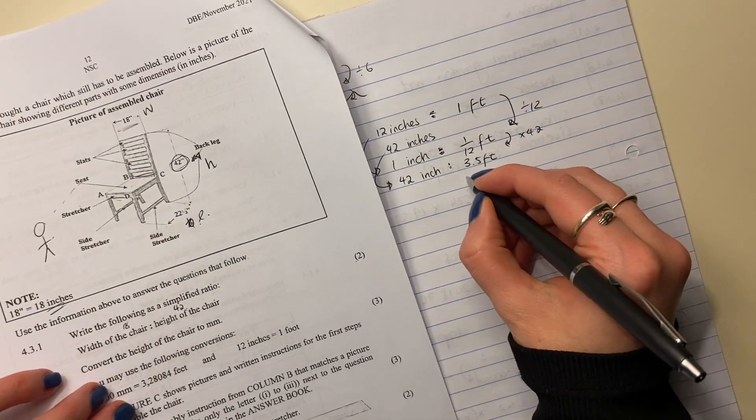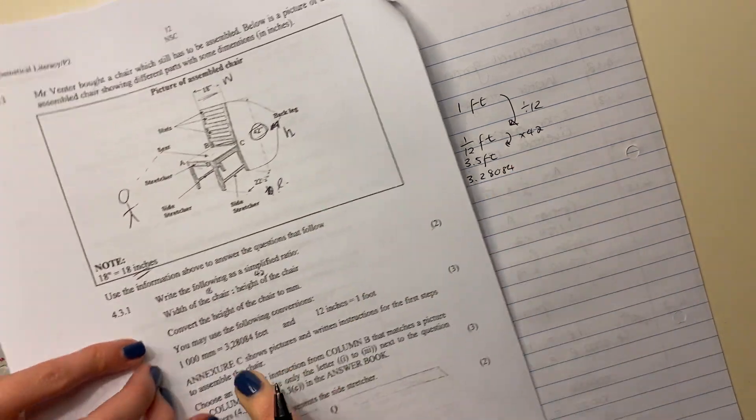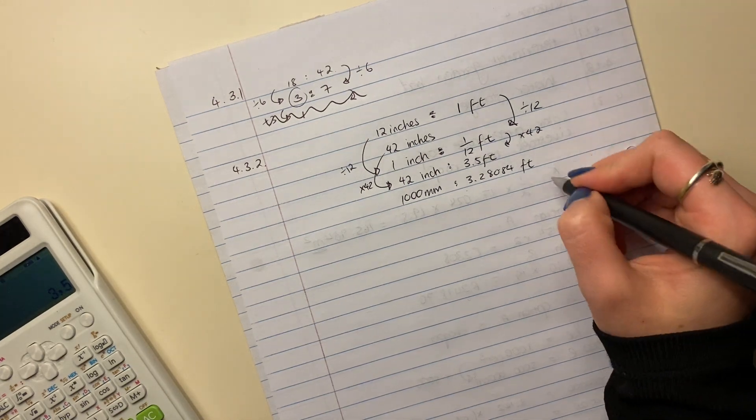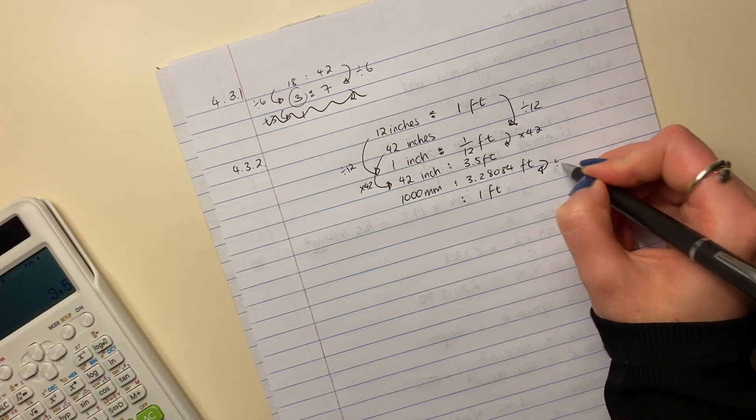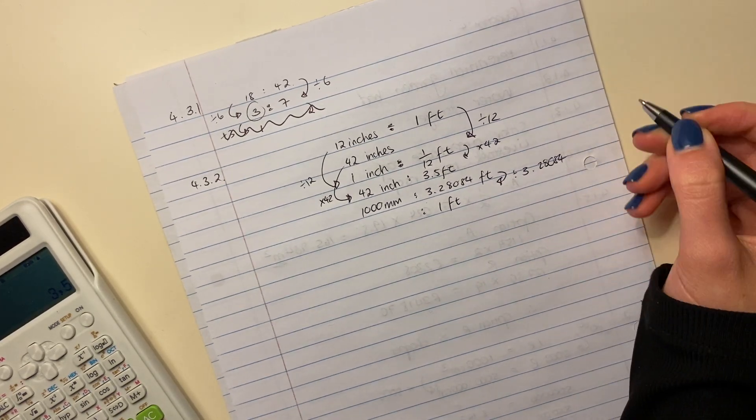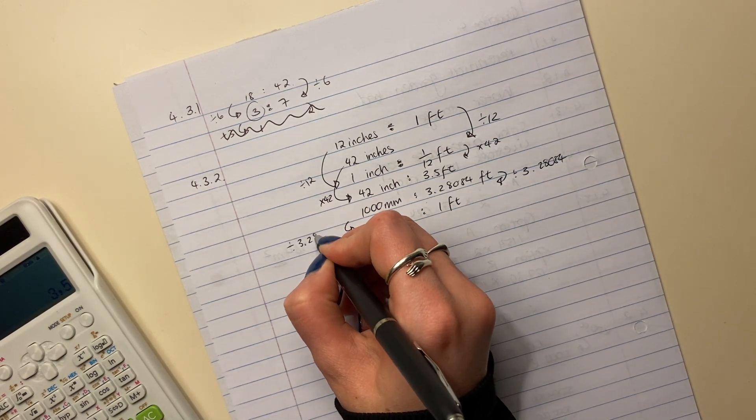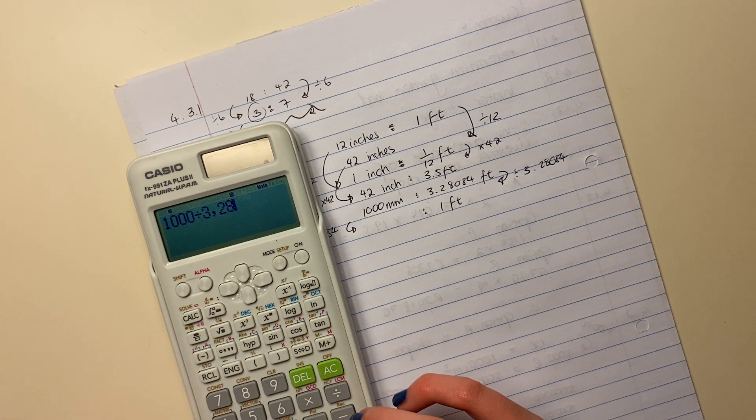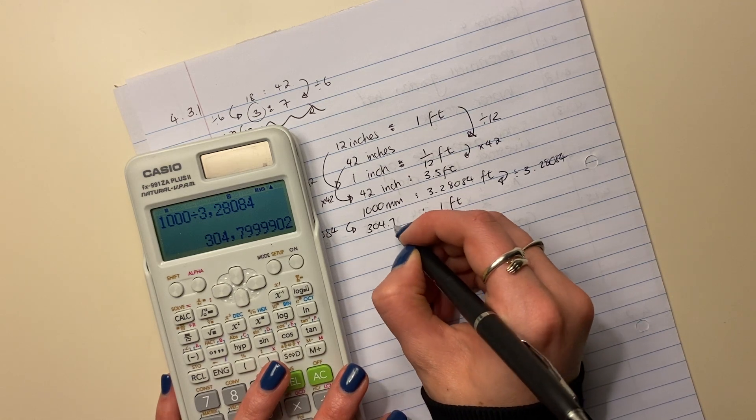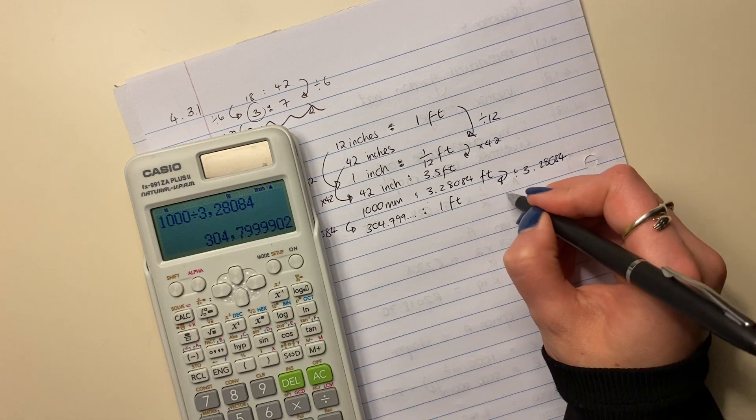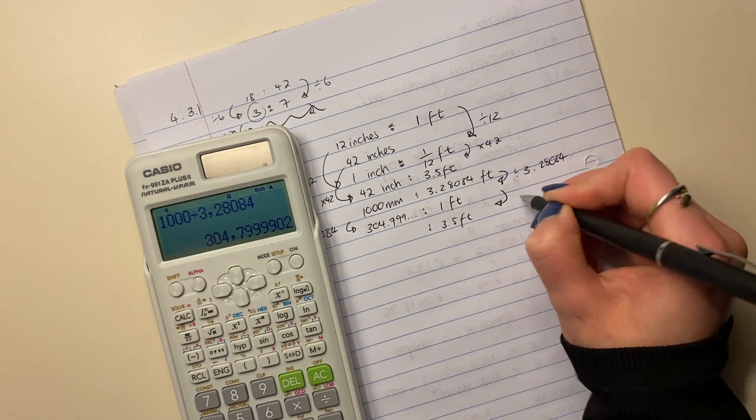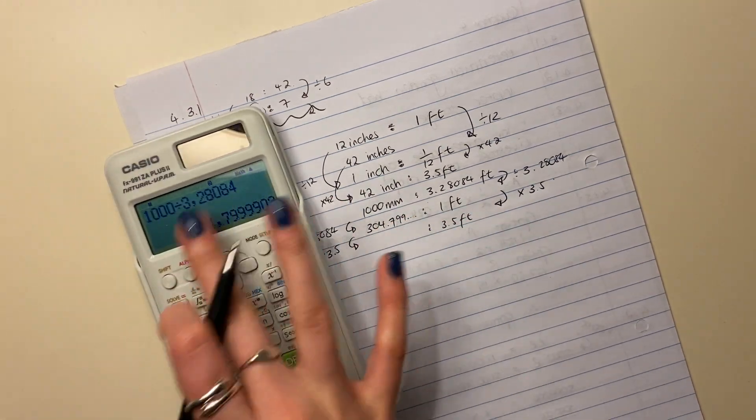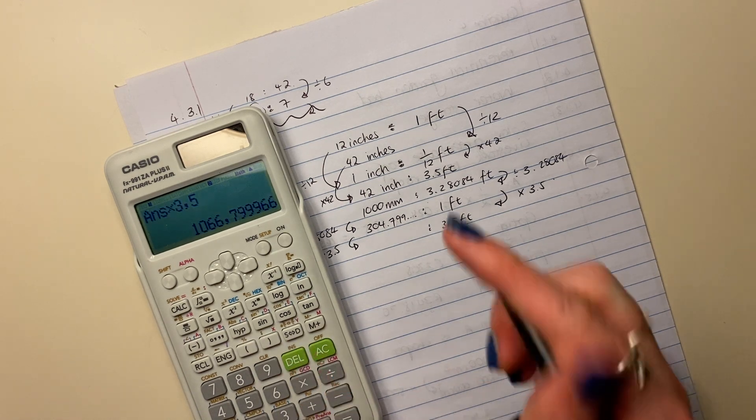Now let's go over here. It says that 3.28084 feet equals a thousand millimeters. So now, similar, make this just equal one foot. We divided it by itself. You could be saying, oh my, it's such a long method. Well, it's a foolproof method, and remember, the whole point is that we stay accurate. So that becomes one foot. Then we say a thousand divided by 3.28084, and that becomes 304.799. Keep that in your calculator. Then over here, we want this to be 3.5 feet. So we're going to times that side by 3.5. What we do to the one side, we have to do to the other side. So we're going to take this value, and we're going to times it by 3.5. And there is our answer.